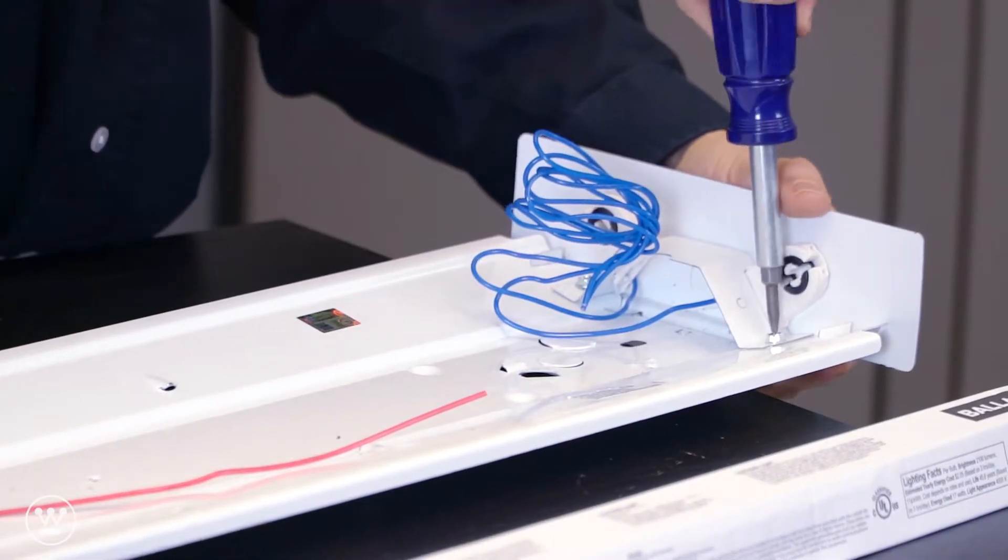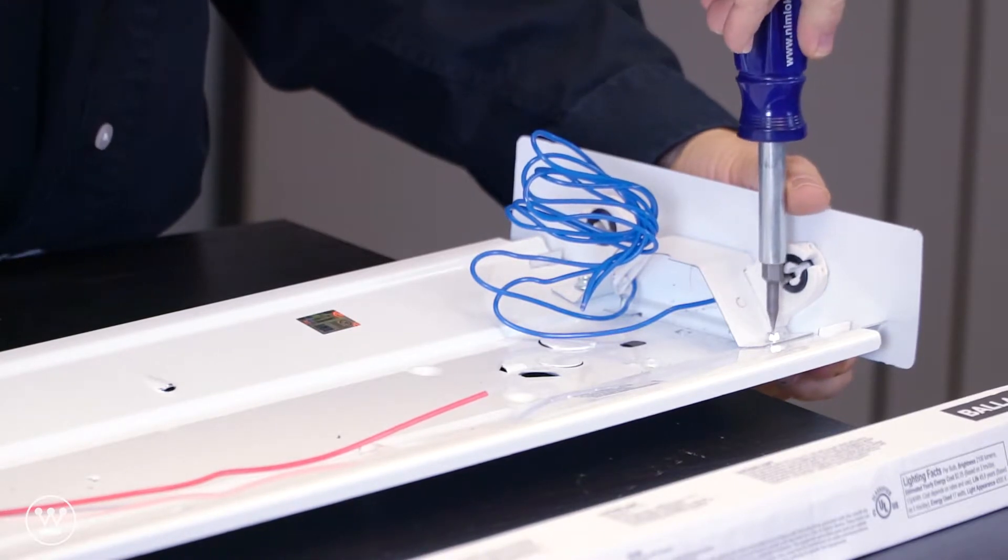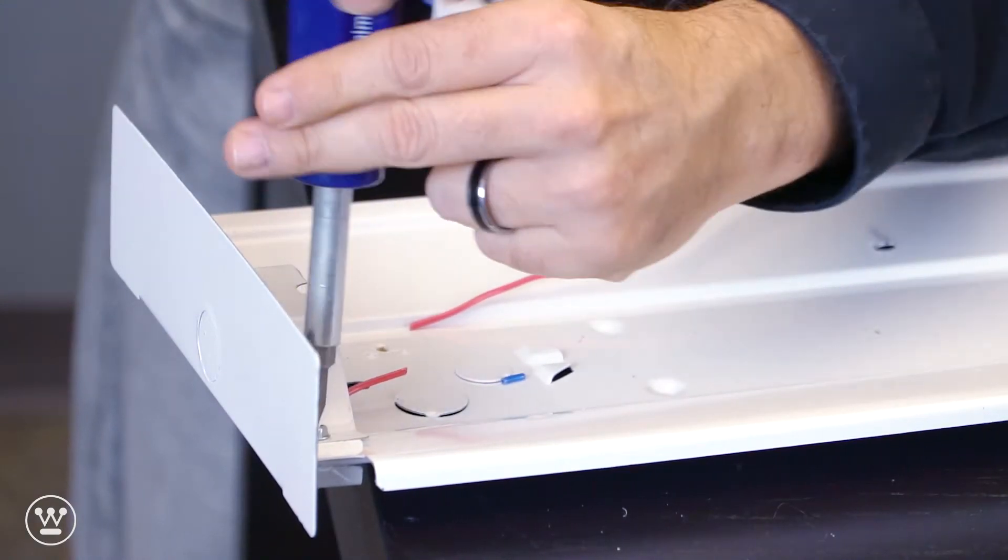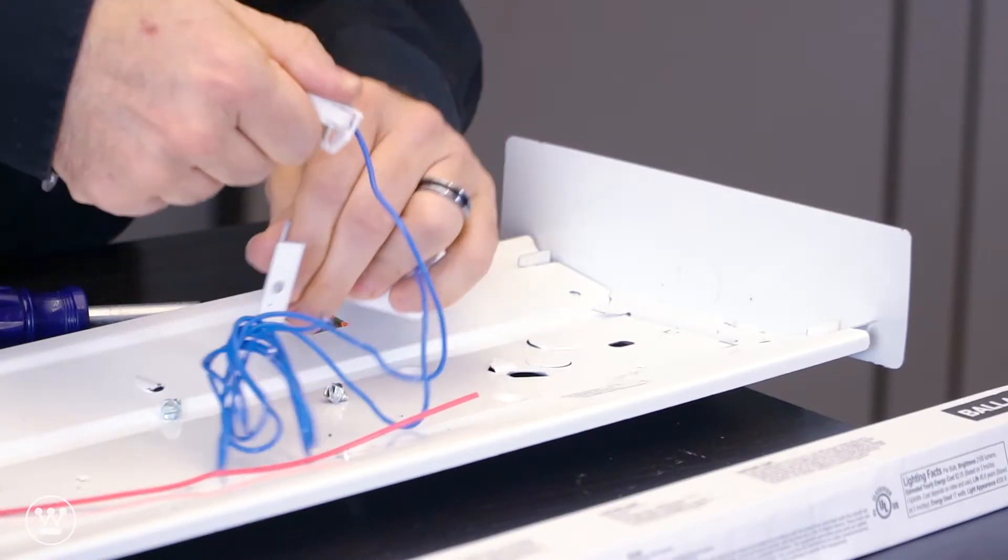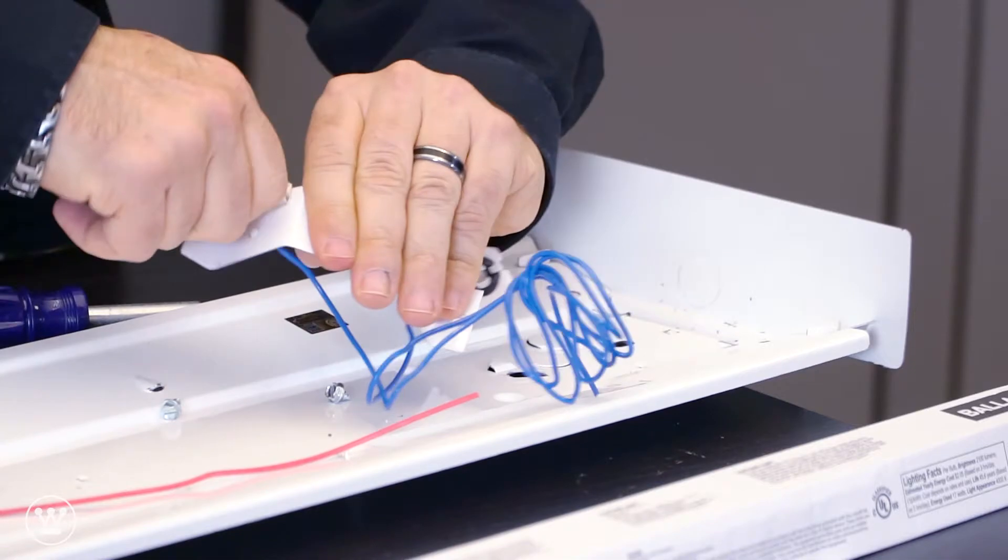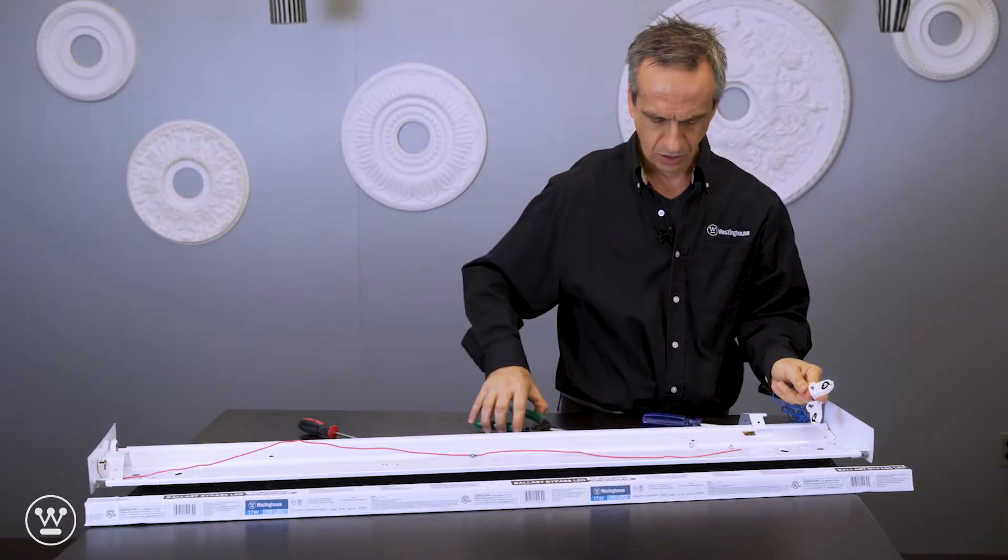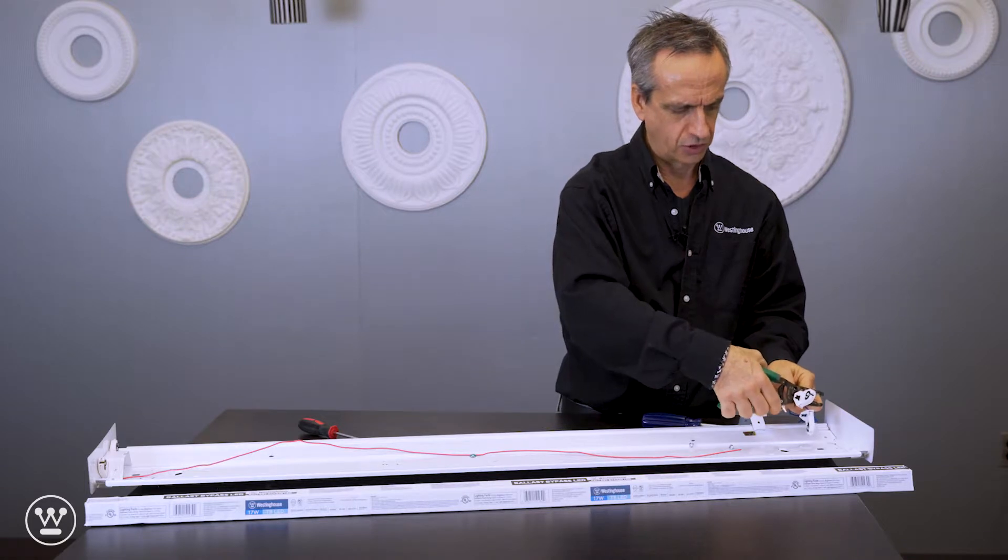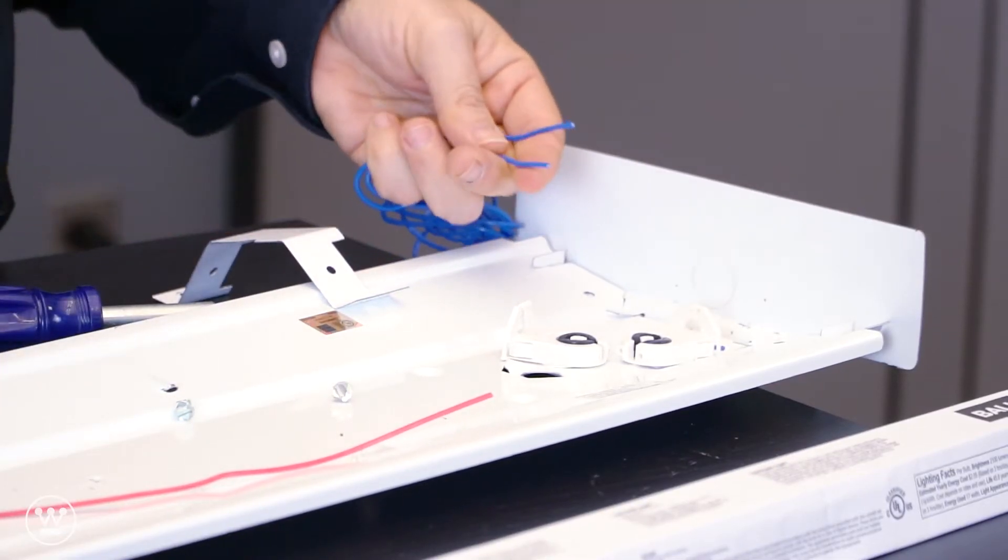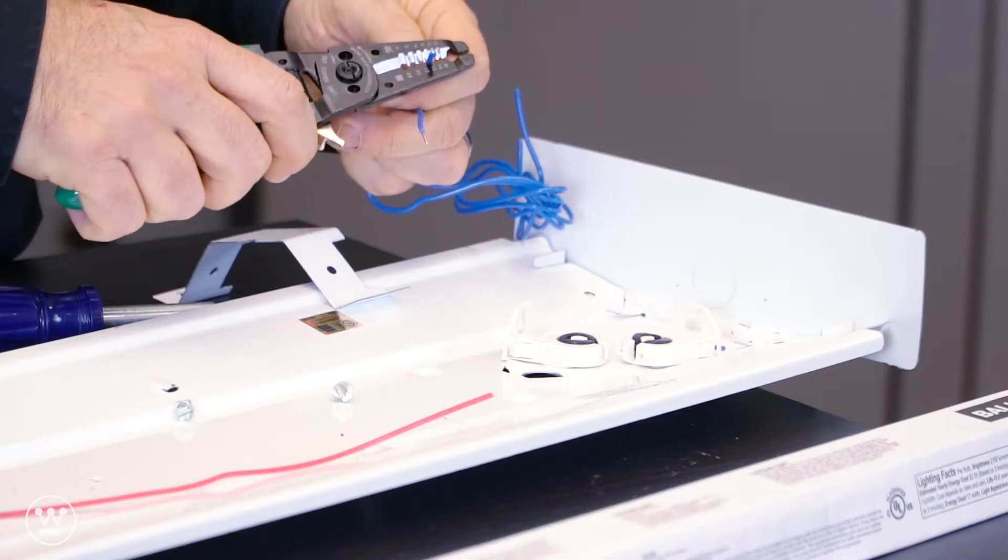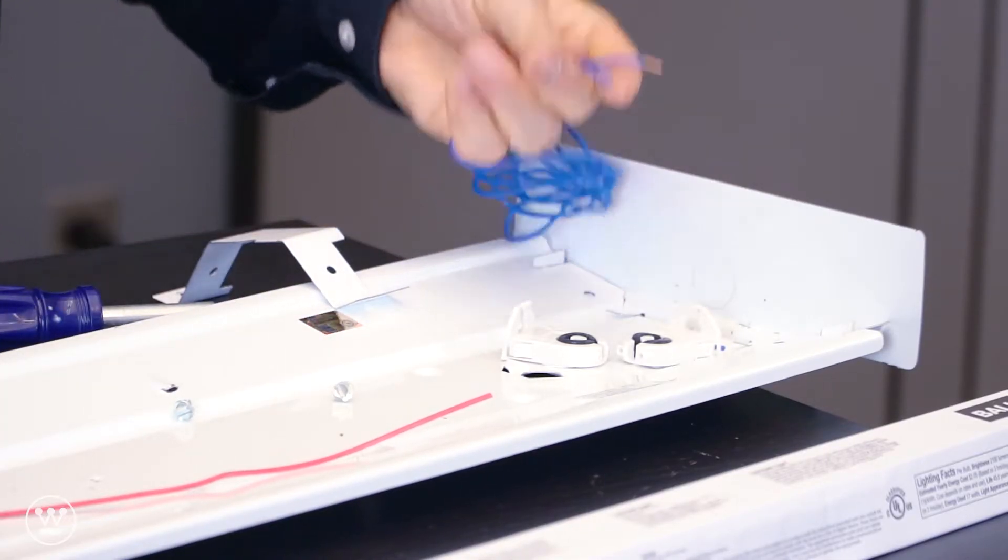First thing we want to do is remove the bracket and make the wiring much easier. These tombstones slide right off the bracket. The easiest way to remove the wire is to cut it from the tombstones. We want to make sure we have a good clean end that's nicely stripped.